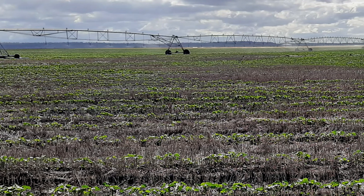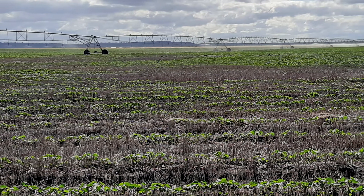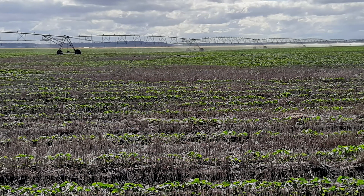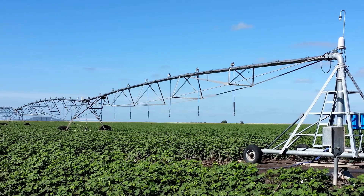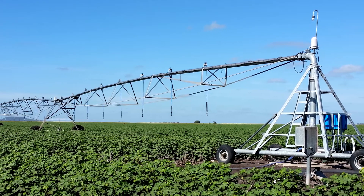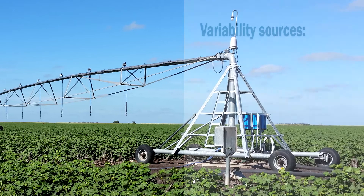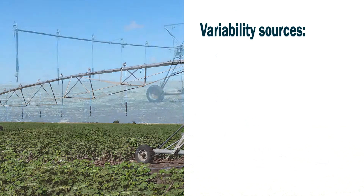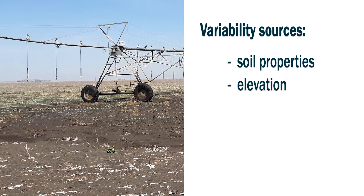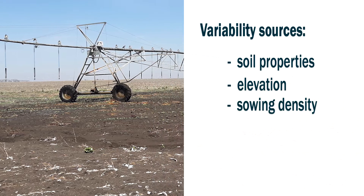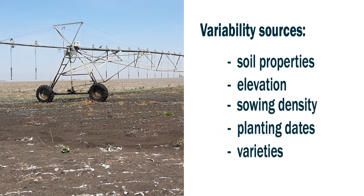These irrigation machines traditionally apply irrigation uniformly over the field. However, there is often spatial variability in irrigation requirements because of differences across the field in things like soil properties, elevation, sowing density, and even planting dates or varieties.